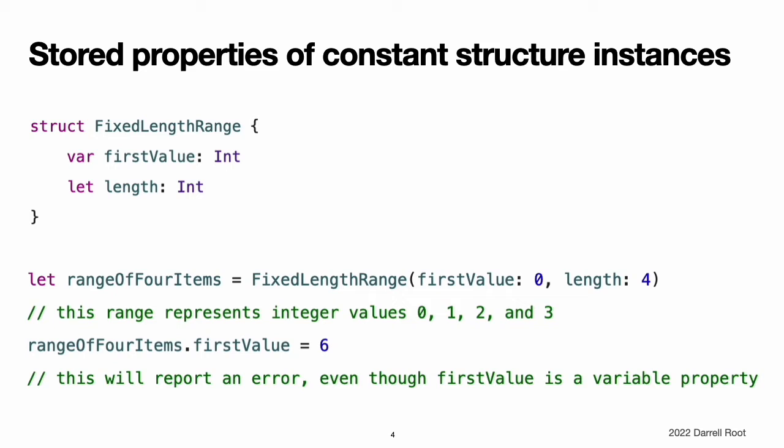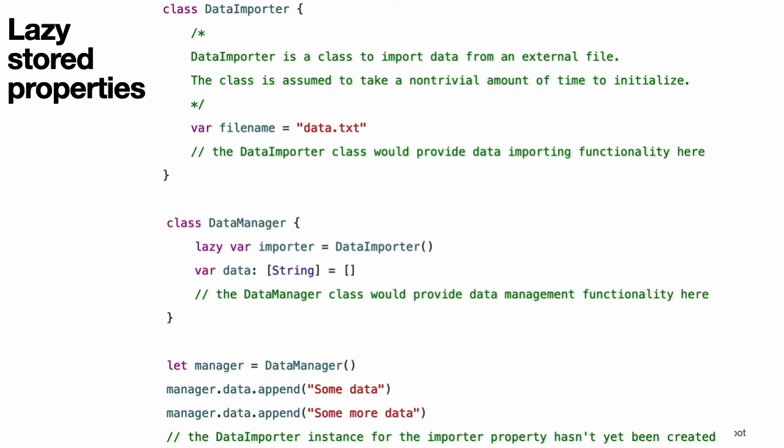This is not true for classes, which are reference types. If you assign an instance of a reference type to a constant, you can still change that instance's variable properties.